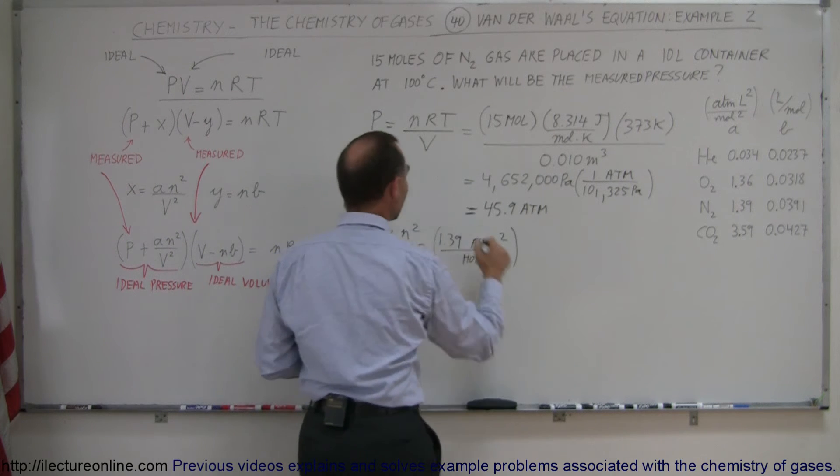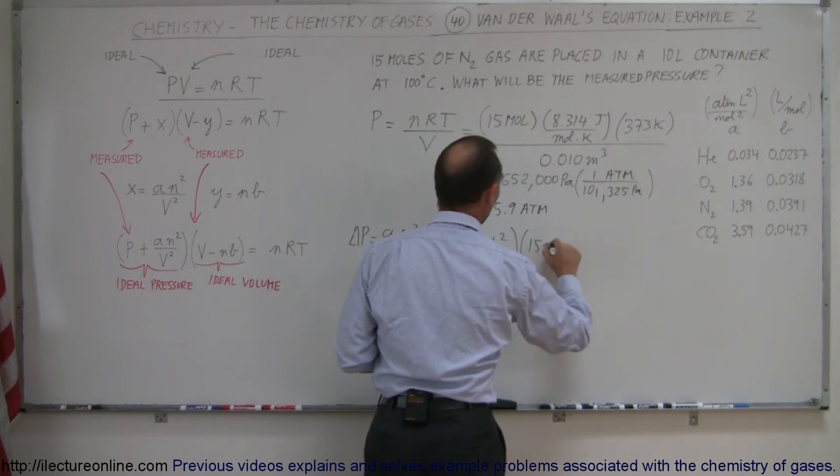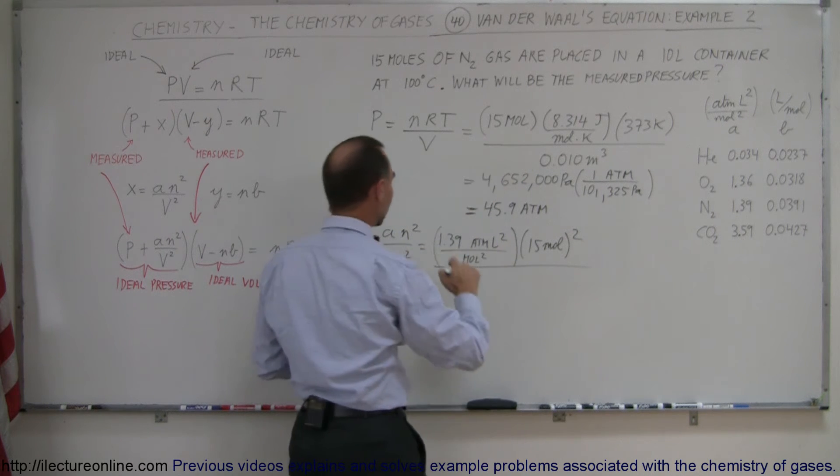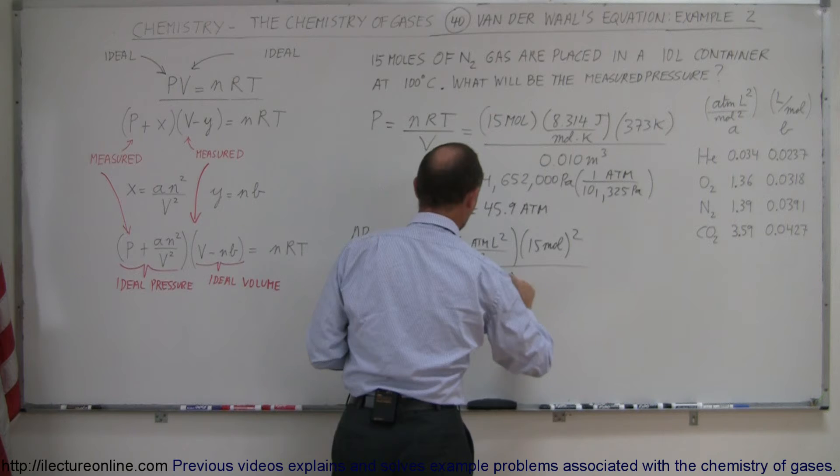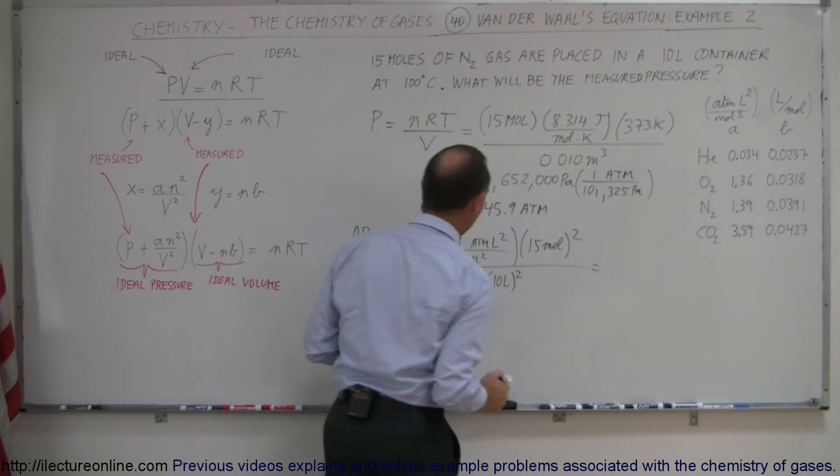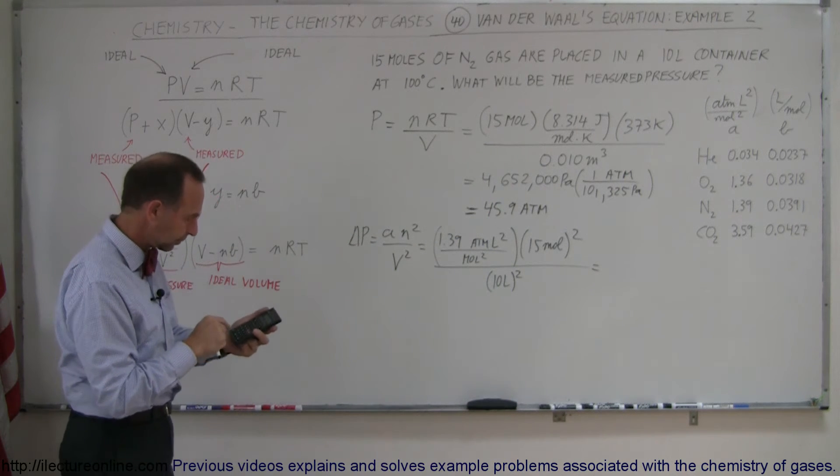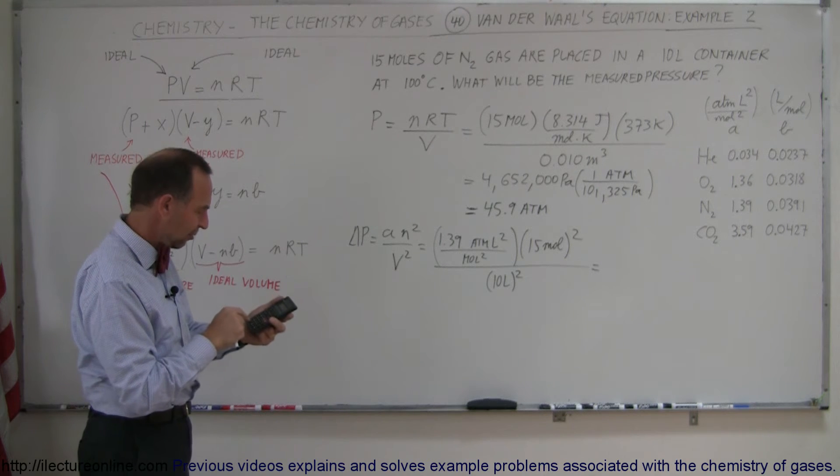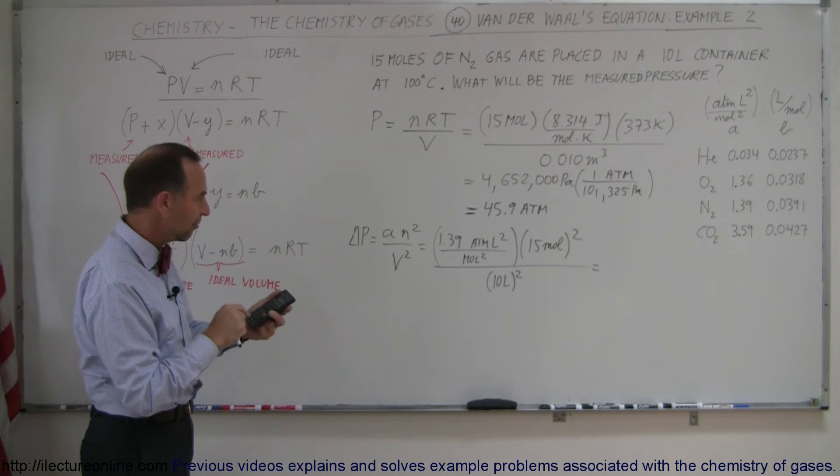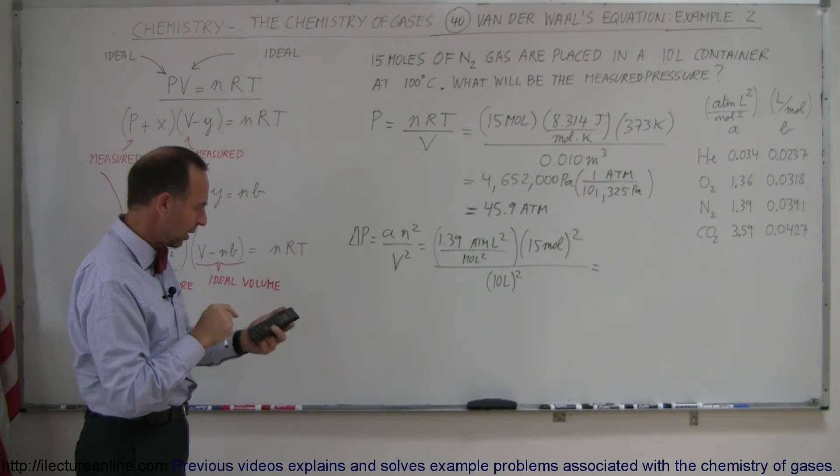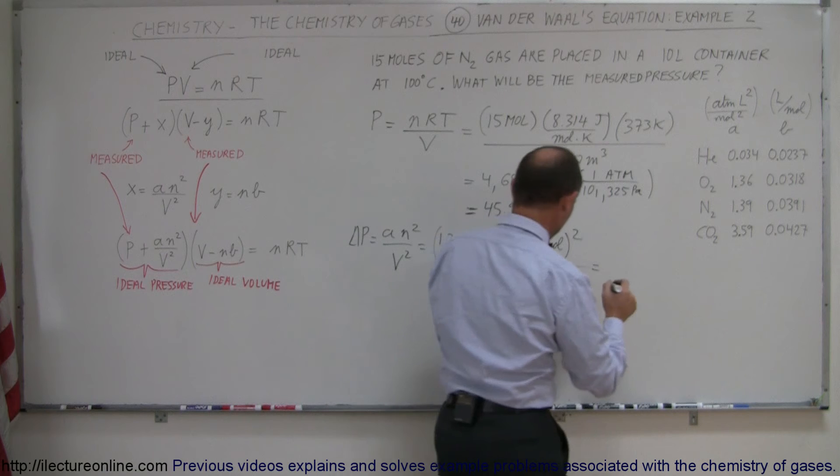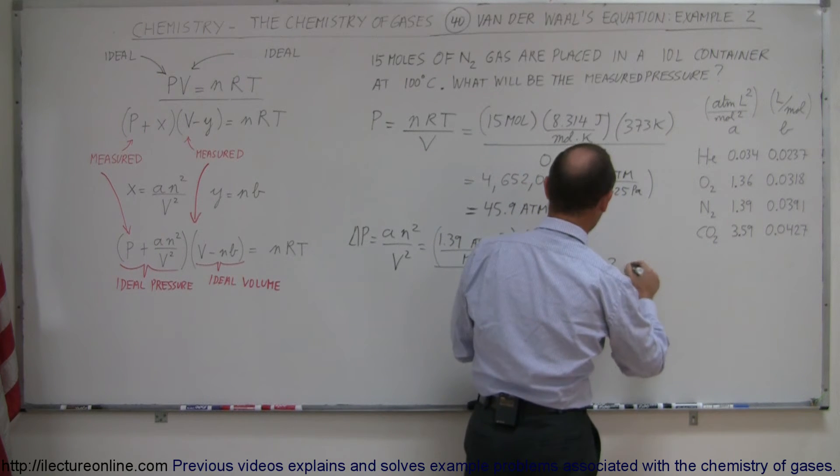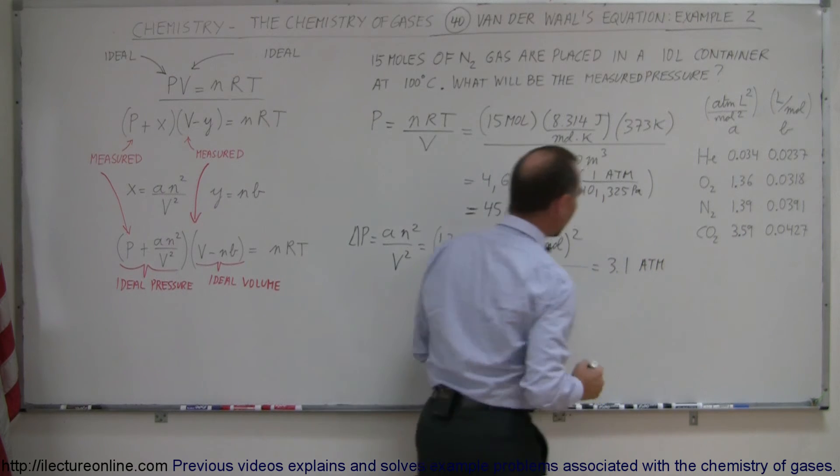Number of moles, we have 15 moles. We take 15 moles and we square that number, and we divide the whole thing by the volume. We have 10 liters, so 10 liters, and we square that as well. So what adjustment factor do we get on the pressure? 1.39 times 15 squared, which is 225, and divide it by 100, which is 10 squared. And notice that the adjustment factor here is 3 point, let's just round it off to 3.1 atmospheres.